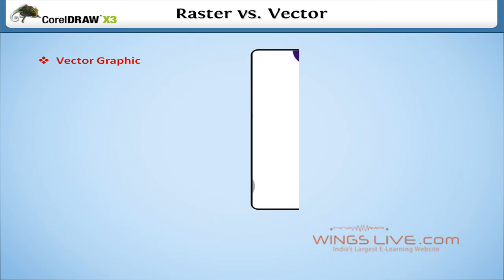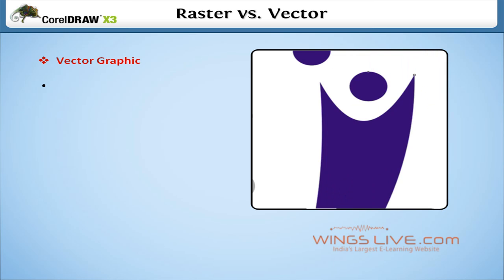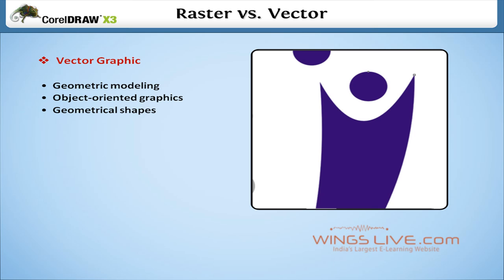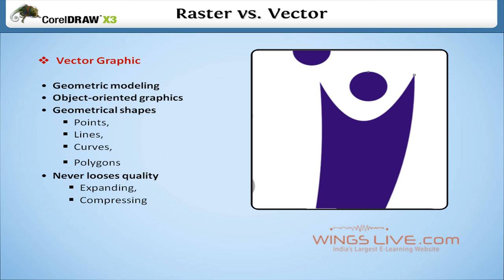Vector graphics, also called geometric modeling or object-oriented graphics, is the use of geometrical shapes such as points, lines, curves and polygons, which are all based upon mathematical equations to represent images in computer graphics. It never loses quality while expanding or compressing images.